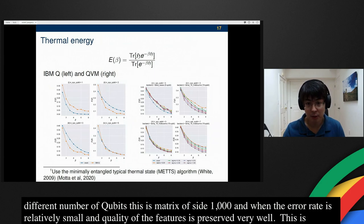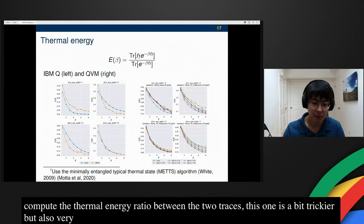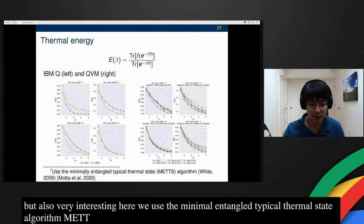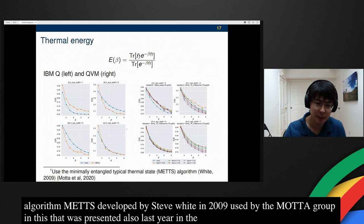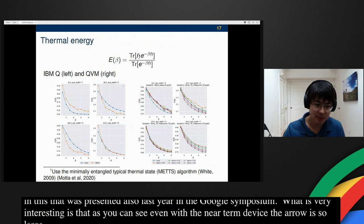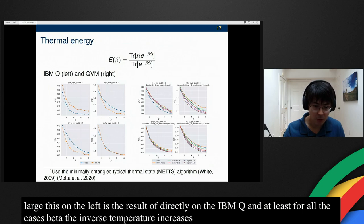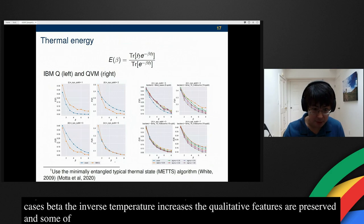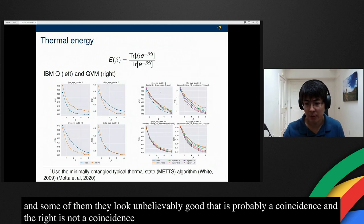This is to compute the thermal energy, which is to compute the ratio between the two traces. This one is a bit trickier, but also very interesting. Here we use the minimal entangled typical thermostate algorithm called METTS, developed originally by Steve White in 2009, also used by Motta and Garnet-Chan's Group in the paper on this Kitaev thing that was presented also last year in the Google Symposium. What is very interesting is that, as you can see, even with the near-term device, the error is so large. This on the left is the result obtained directly on IBM Q. At least for all the cases, as beta, the inverse temperature increases, the qualitative features, they are all preserved, and some of them look unbelievably good. I would say that's probably a coincidence. On the right is not a coincidence. Again, this is from QVM, so the error becomes smaller and smaller, and you can see it gracefully converges to the correct result.